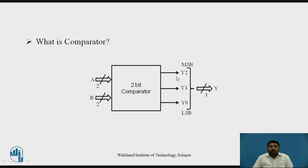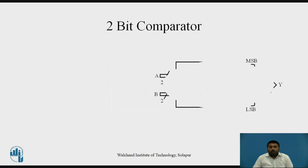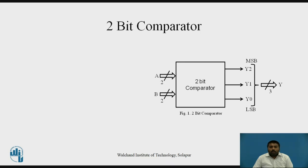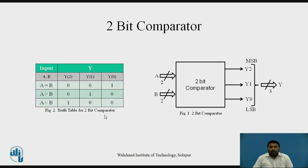Now before writing the test bench, let's look at the VHDL code for this 2-bit comparator. This is the code, and based on it we have the truth table. Depending on the inputs: when A equals B, Y[0] bit is 1 and the remaining 2 bits are 0; if A is greater than B, Y[1] bit is 1 and remaining bits are 0; and if A less than B, Y[2] bit is 1 and remaining bits are 0. These describe the behavior of the comparator.